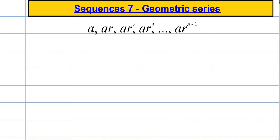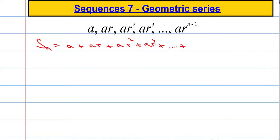If I was to sum up this geometric sequence, I would have to add A, I would have to add AR, I would have to add AR squared, AR cubed, and so on and so forth until we get to the final term AR to the n minus 1. What we're going to do is take this equation and I'm going to call it equation 1.